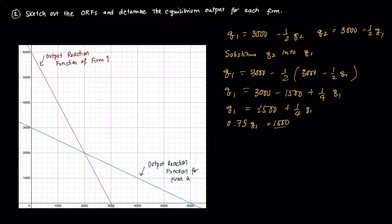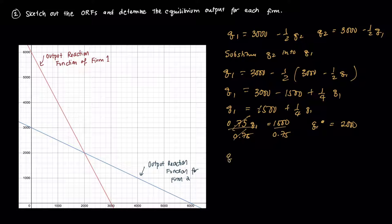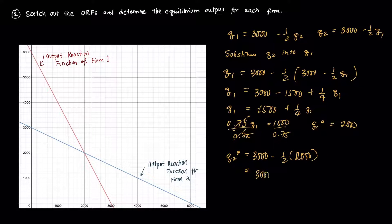Simplifying: 0.75Q1 = 1500, so dividing both sides by 0.75 gives Q1* = 2000. To find firm 2's equilibrium output: Q2* = 3000 − ½ × 2000 = 3000 − 1000 = 2000. So both firms produce Q* = 2000 at the Cournot equilibrium.